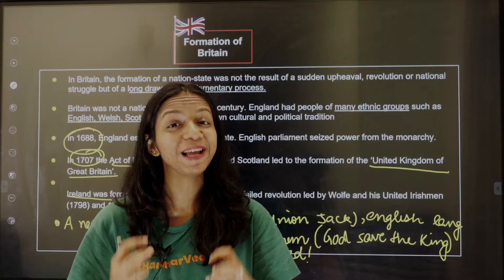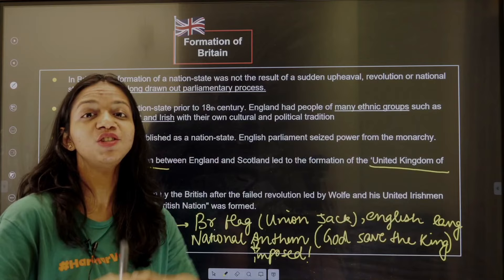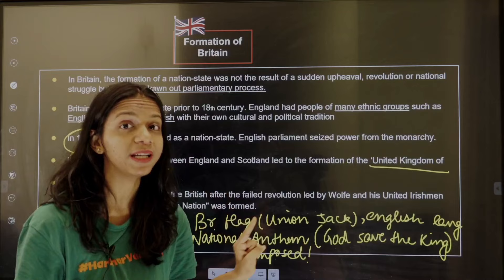After that, how did it become a union? In 1707, the Act of Union brought Scotland into the fold of England, and there was a formation of the United Kingdom of Great Britain.